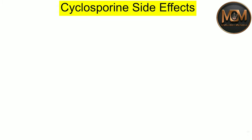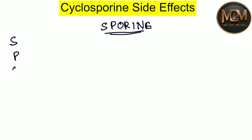Without wasting any time, let's get started. First of all, we just have to learn the mnemonic, which is SPORINE. SPORINE itself is a mnemonic from which we can easily learn the side effects of cyclosporine. I'm going to write it out: S, P, O, R, I, N, and E.